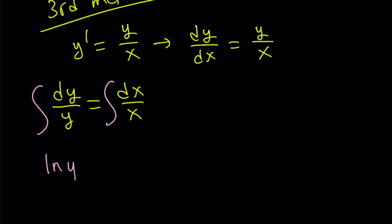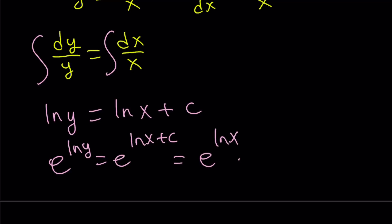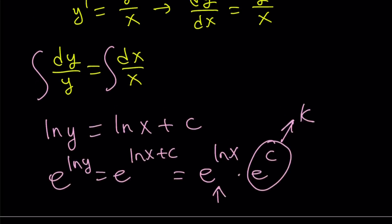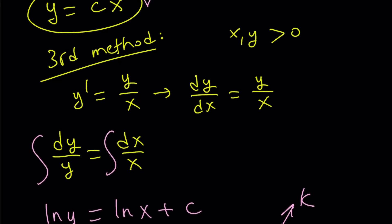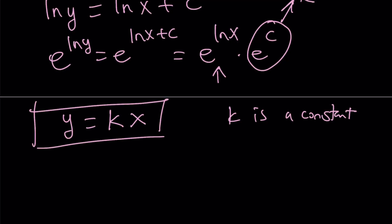Now I can raise e to the power of both sides: e to the power ln y equals e to the power (ln x plus c), which can be written as e to the power ln x times e to the power c. Since e to the power c is just a constant, we can call it k. And e to the power ln y is simply y, while e to the power ln x is x. So we get y equals kx — not very different from the other solutions, because k is just a constant.